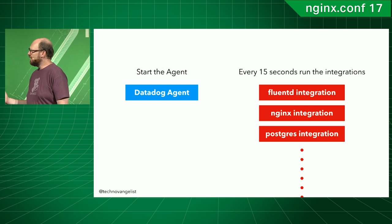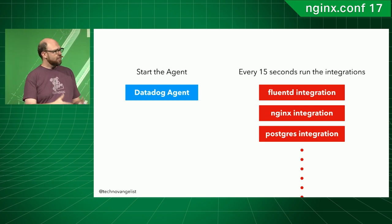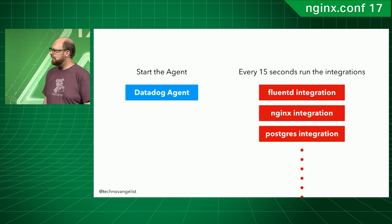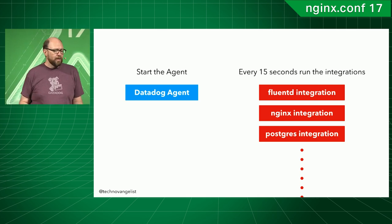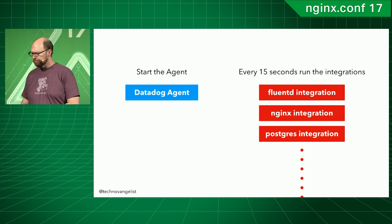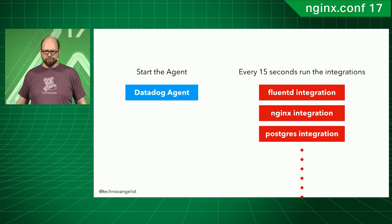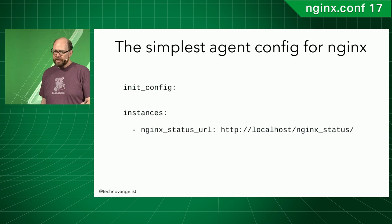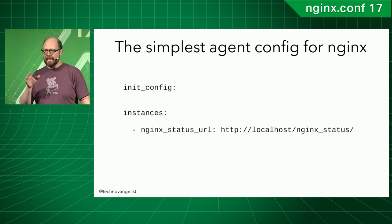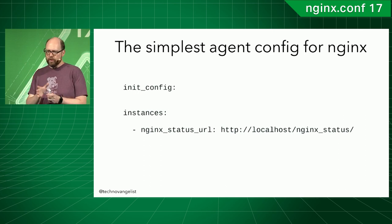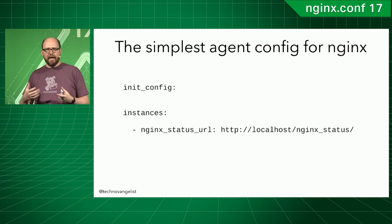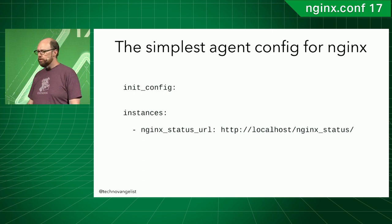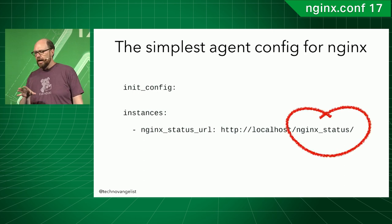Hopefully you're not loading up 1,000 applications on your Nginx server — there are security reasons why that might not be a great idea — but we don't care; we'll keep running all of these integrations every 15 seconds. So what does it look like to create a configuration? It's pretty simple. We really only care about the Nginx status URL, often something like localhost/nginx_status.